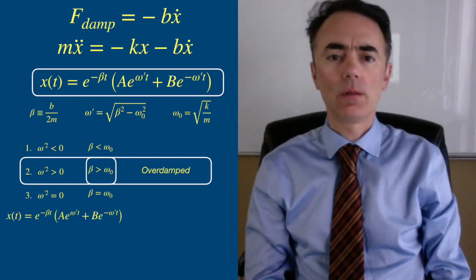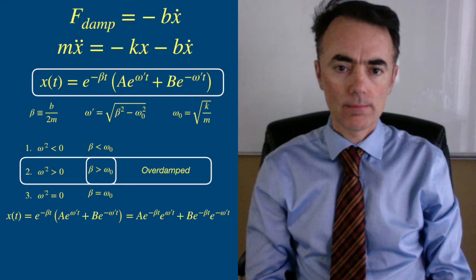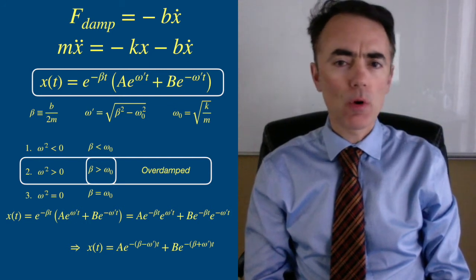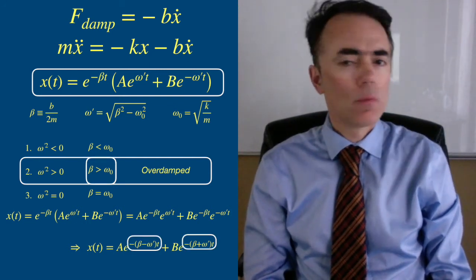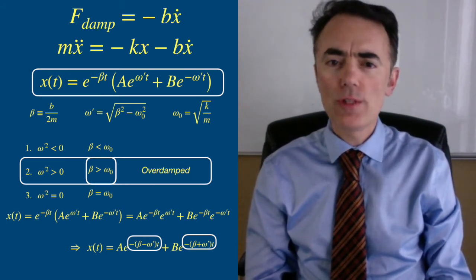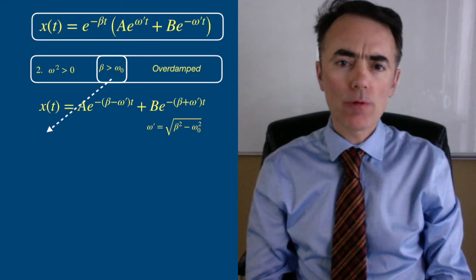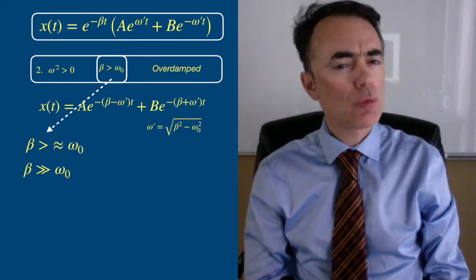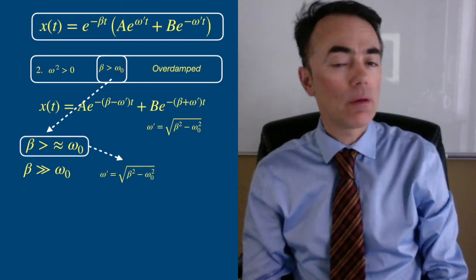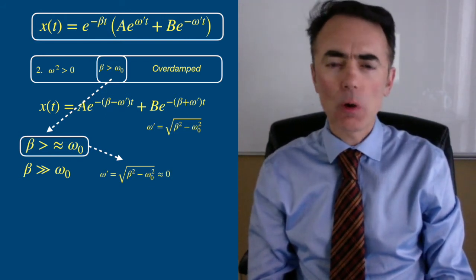Let's write this down. Because now beta is greater than omega prime, both exponents are negative. So we have two decaying exponentials in the solution of the overdamped harmonic oscillator. Here beta can go from slightly larger than omega naught to much much larger than omega naught. If beta is just slightly larger than omega naught, then omega prime is almost zero.